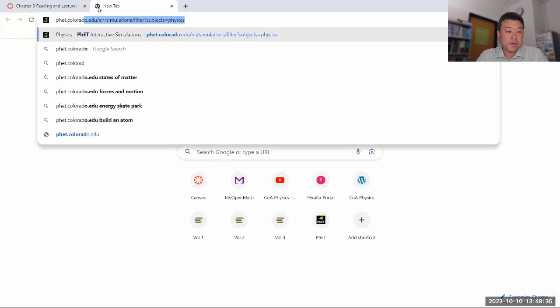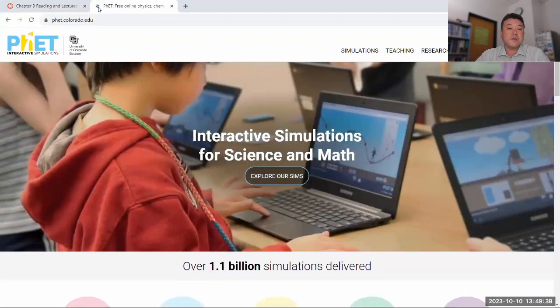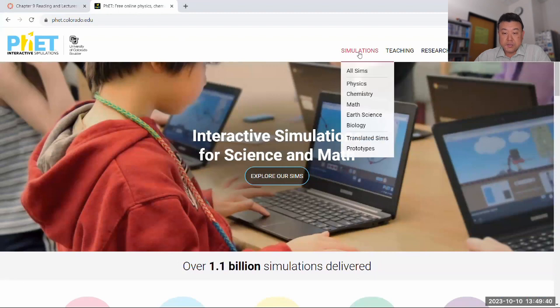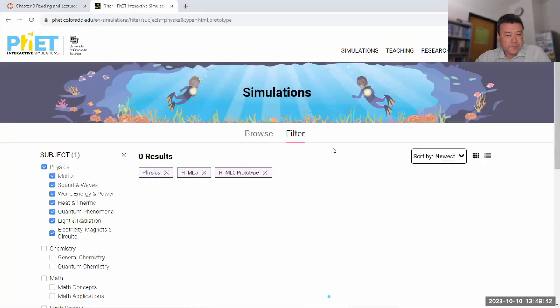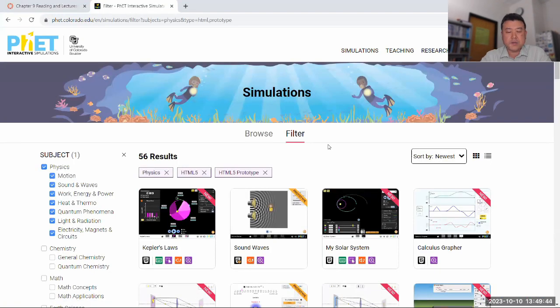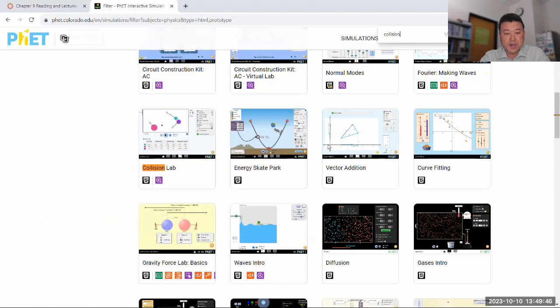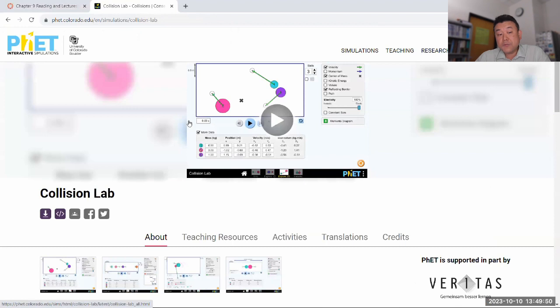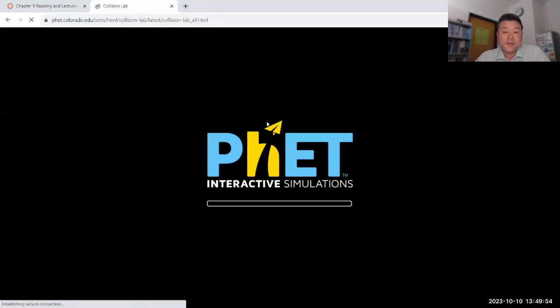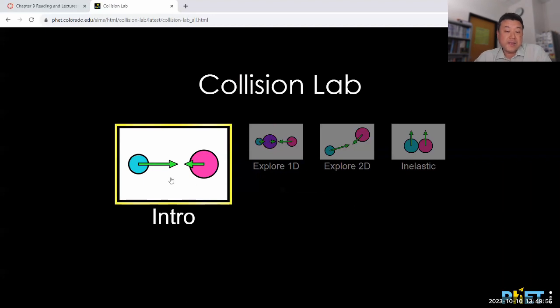So PhET.Colorado.edu. I'm gonna go to simulations. And I think if you just go to physics and search for something called the Collision Lab. Yeah, that's right there. And it's HTML5. Beautiful. It runs on any device, runs on your mobile devices, runs anything that can run a modern web browser.